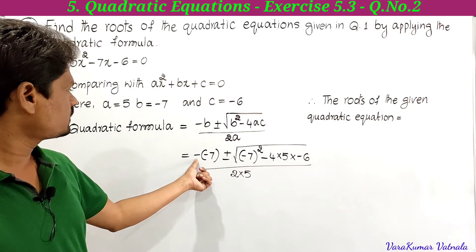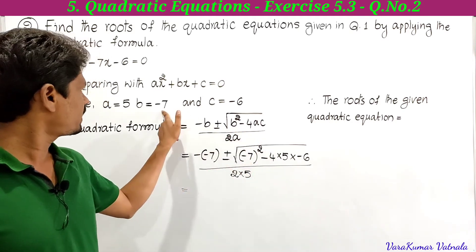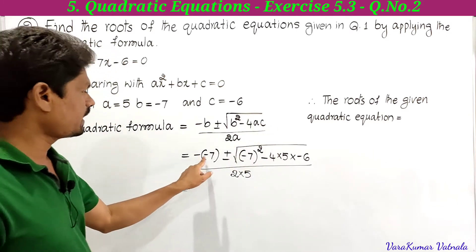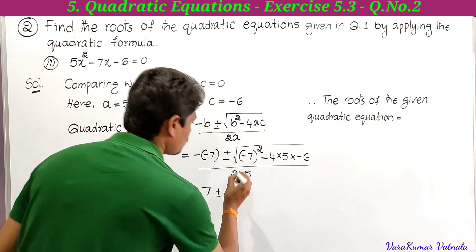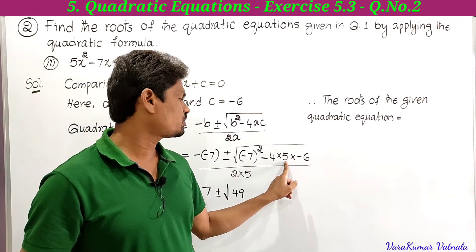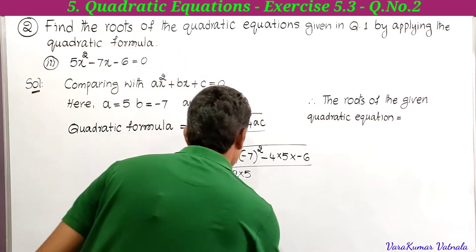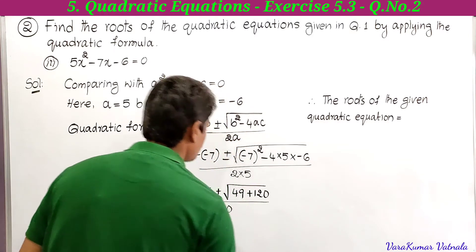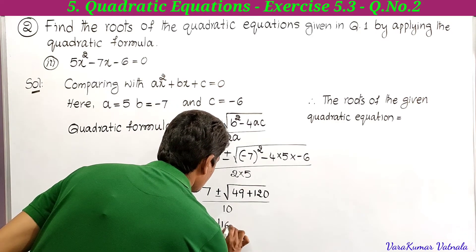Simplifying: 7 plus or minus square root of (−7)² = 49, and 4 × 5 × (−6): since minus × minus = plus, we get +120. So 49 + 120 = 169, divided by 10. We get 7 plus or minus square root of 169 divided by 10.